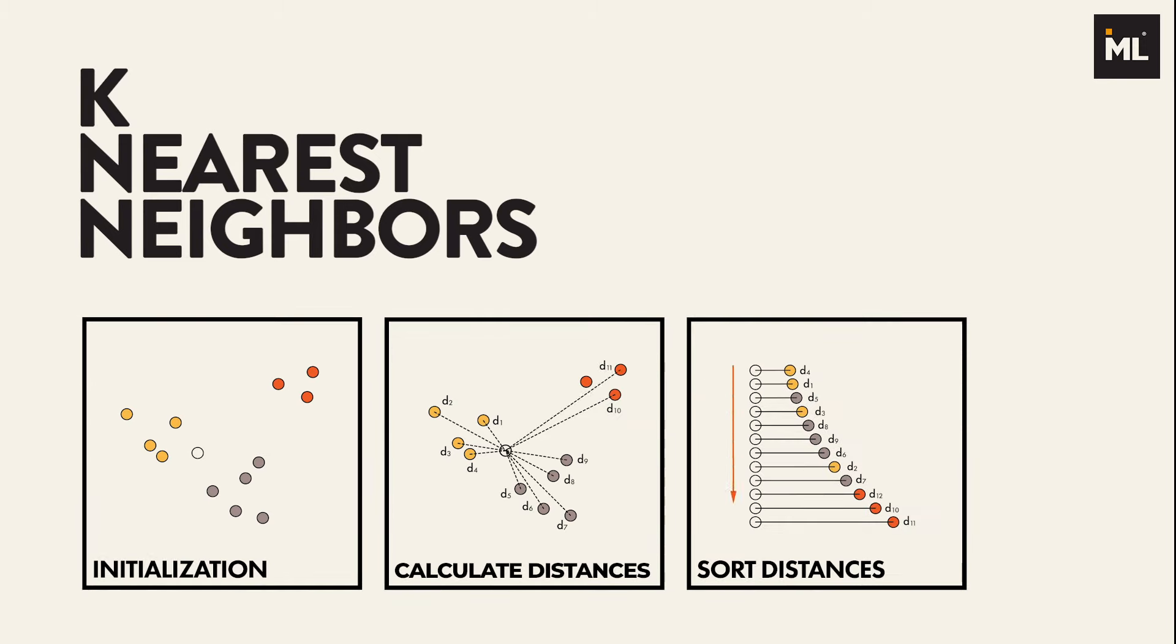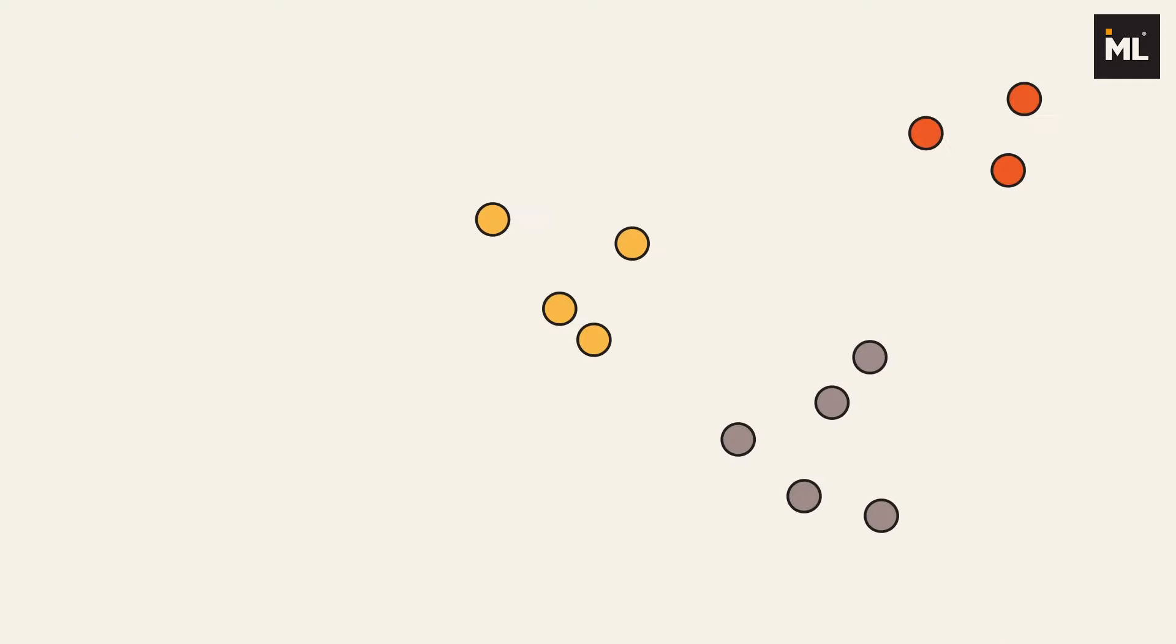K-nearest neighbor is a super simple supervised machine learning algorithm that can be used for both classification and regression problems. Here is a simple two-dimensional example to help you better understand this algorithm. Let's say we want to classify the given point into one of three groups.